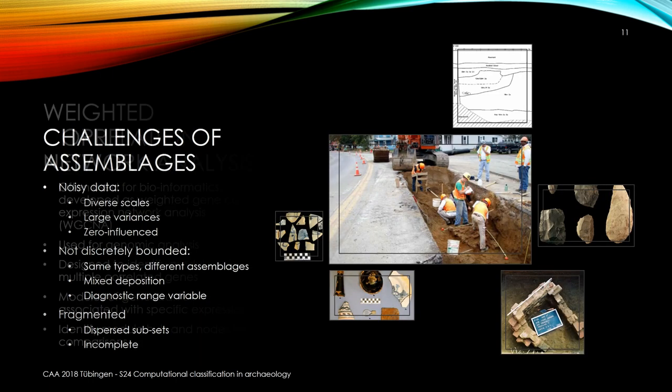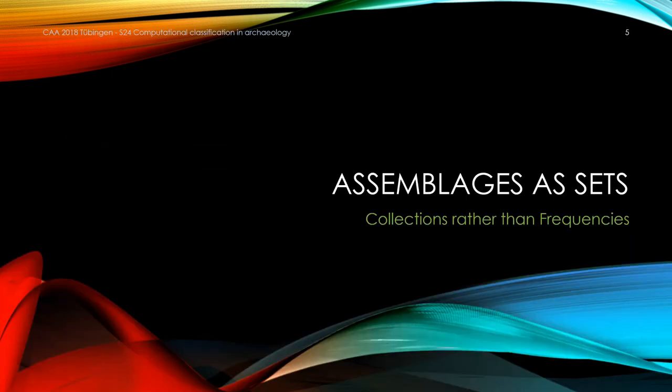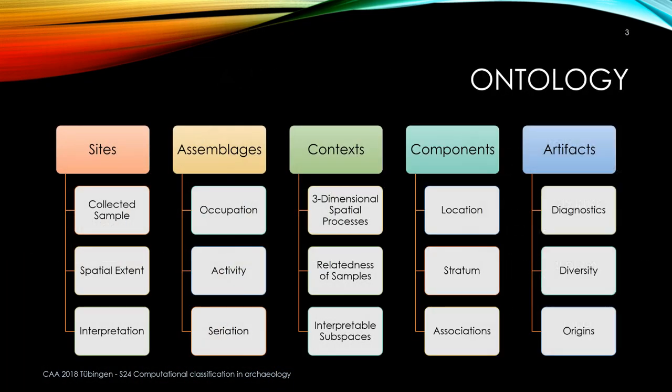What it's doing is essentially partitioning on all the dimensions we're interested in. Going back to my ontology slide: we know our site extents, we know our total collection, we know our components because that's our controlled excavation. The two things we have to figure out — which are interpretive targets — are the assemblages and their contents: space, time, behavior. In this case it ends up being more of a four-dimensional hyperplane. Using sets rather than frequencies eliminates the problem of absence, because you're only comparing things that are there — after which you compare things that are not there.